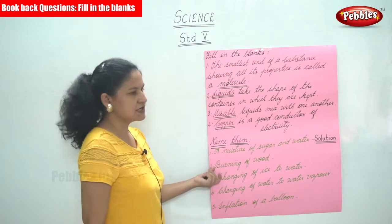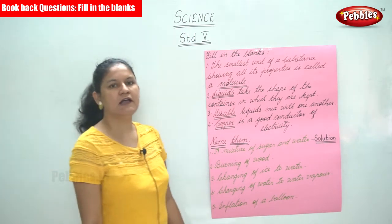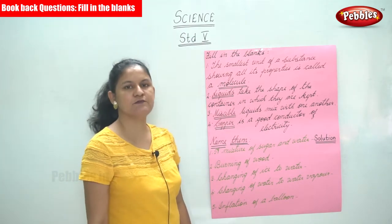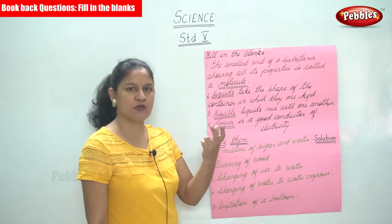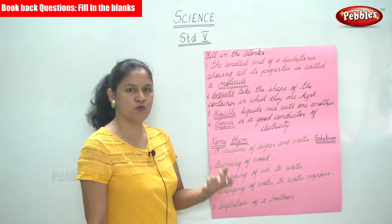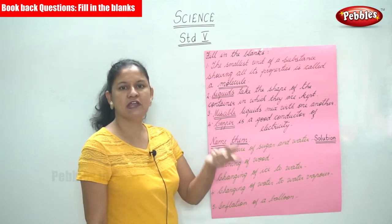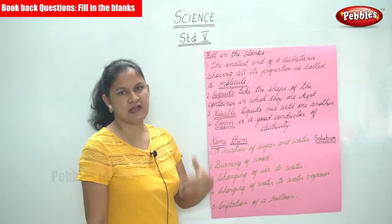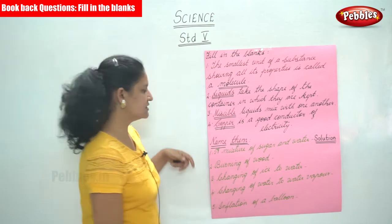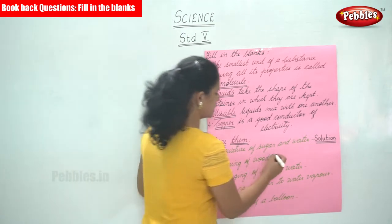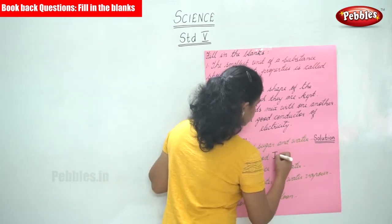The next is: burning of wood is an irreversible change. We cannot bring it back — when we burn wood it turns into ash, and we cannot bring the ash back into wood. Hence it is termed as an irreversible change.